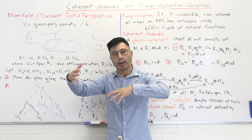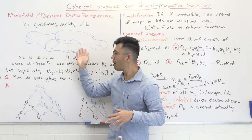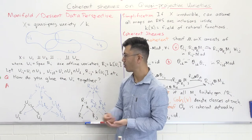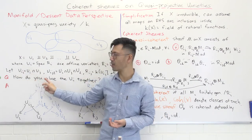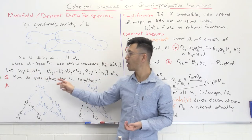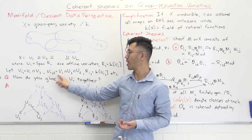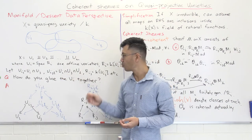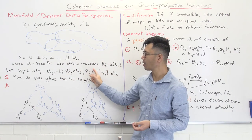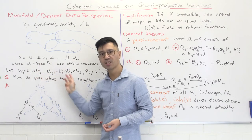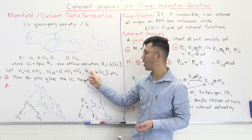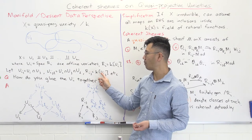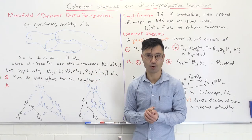We're going to have to glue these various patches together, so we need to know about the intersections and we need good notation for that. I'll use Uᵢⱼ to be the intersection of Uᵢ and Uⱼ. If I have three indices, Uᵢⱼₗ is just the triple intersection. Similarly, we'll denote the coordinate rings of these intersections with Rᵢⱼ being the coordinate ring of Uᵢⱼ and so forth.